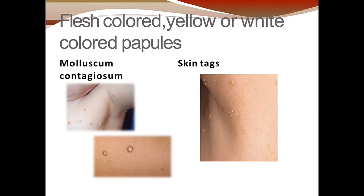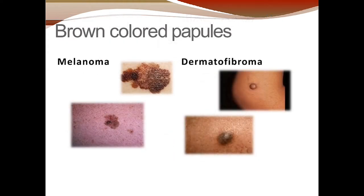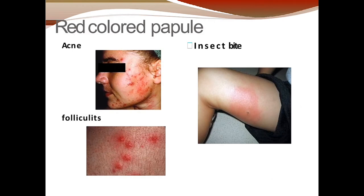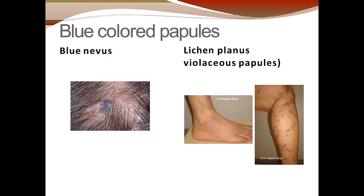Papules may be of various colors. Yellow and white color papules include molluscum contagiosum and skin tags. Brown color papules include melanoma and dermatofibroma — these are slightly raised above the skin and palpable. Red color papules include acne, insect bites, and folliculitis. Blue or violaceous papules include blue nevus and lichen planus.